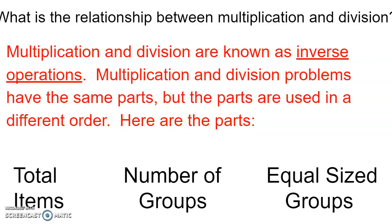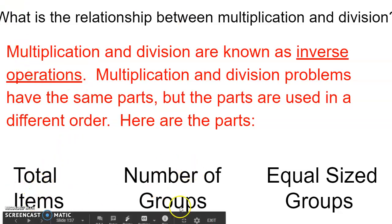Well, in multiplication and division, it's very, very similar. They both have the same number of parts. They have the total items, the number of groups, and the equal-sized groups. This is very important in multiplying and dividing — the groups have to be equal-sized.